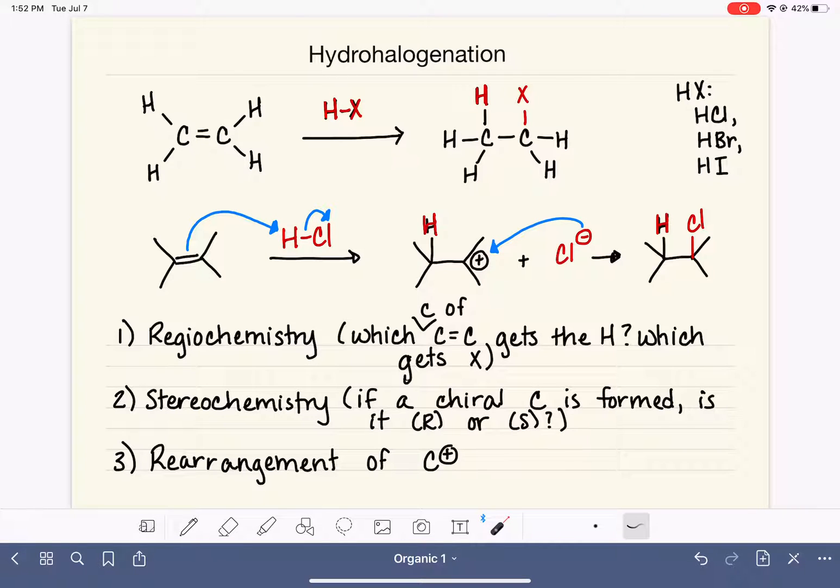We are looking at the addition reaction called hydrohalogenation. This is when we add a molecule of HX - HCl, HBr, or HI - to an alkene.